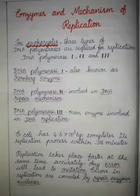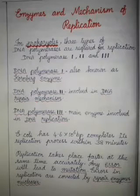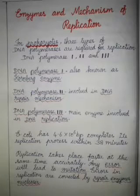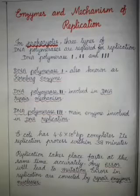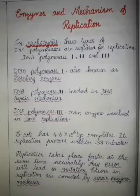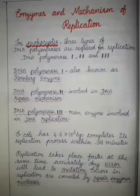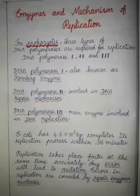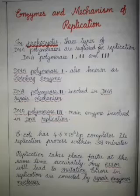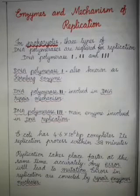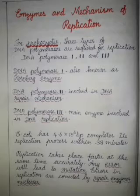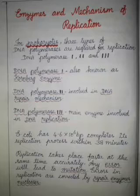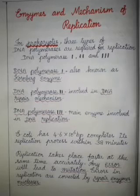E. coli has 4.6 × 10⁶ base pairs. The replication process takes place faster and also very accurately. When there is any error in the replication process it will lead to mutation. The DNA pairs are complementary pairs.